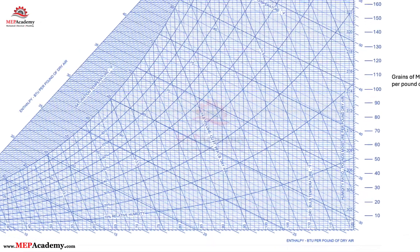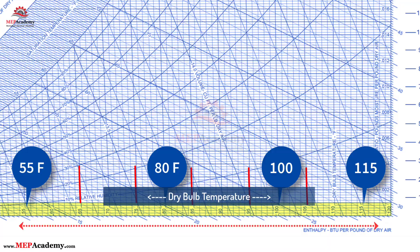The horizontal axis shows dry bulb temperature. The air temperature is in degrees Fahrenheit. Moving to the right, the air temperature gets warmer. While moving left, the air temperature gets cooler.